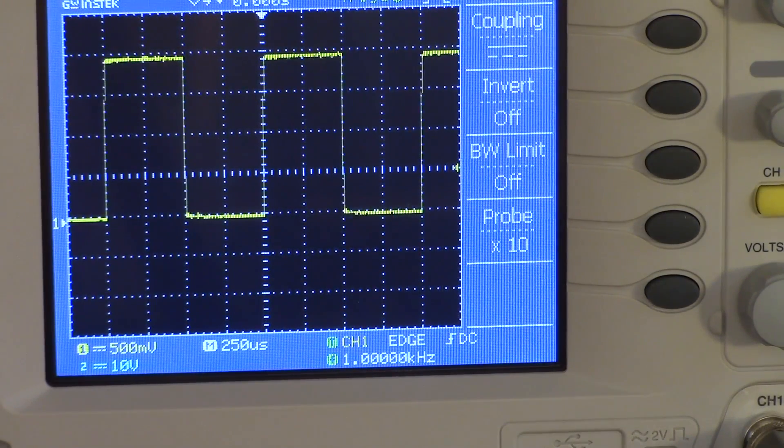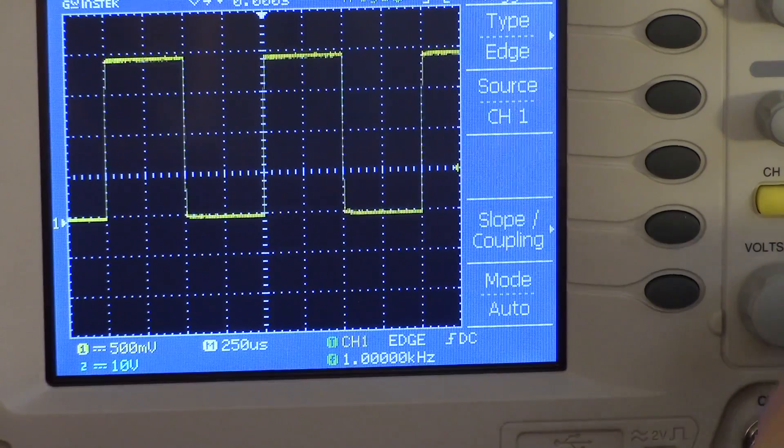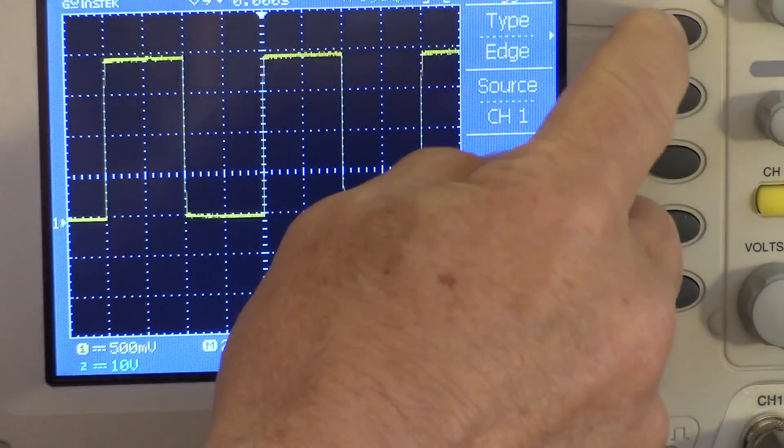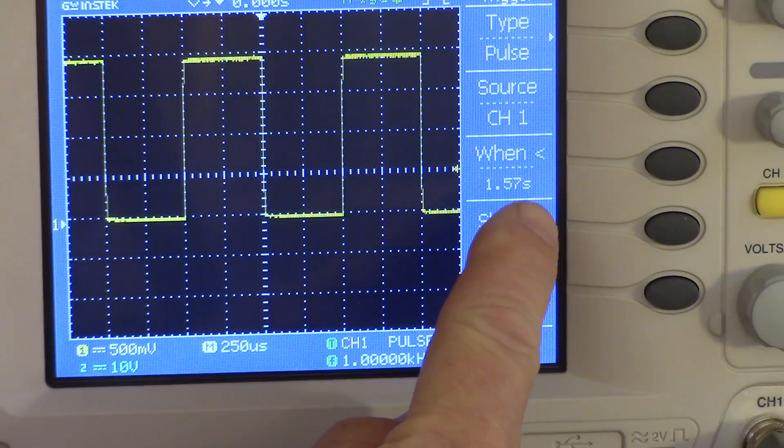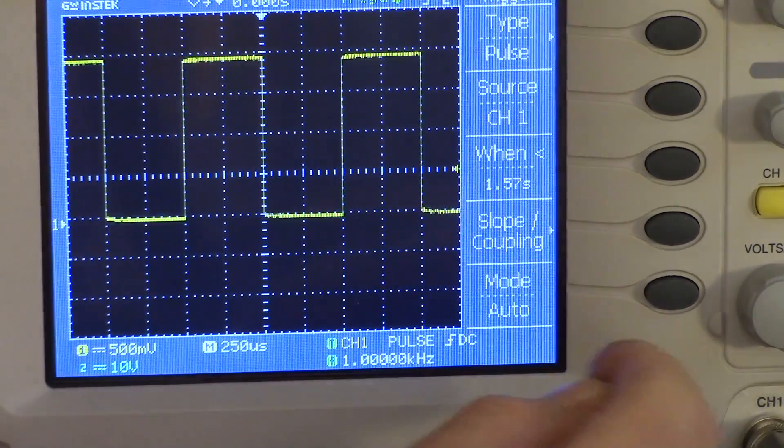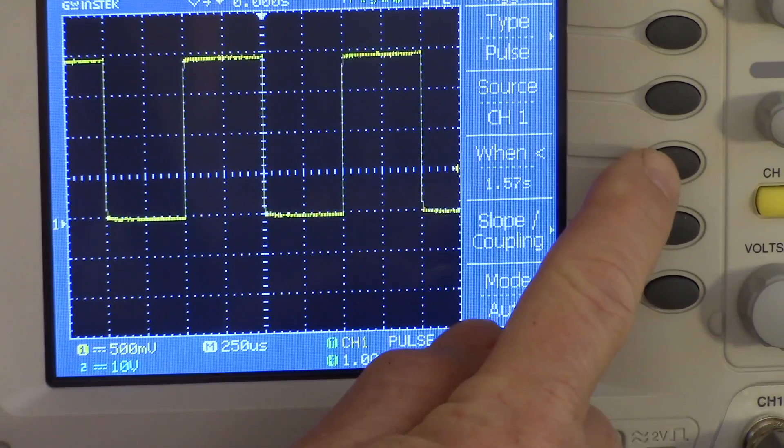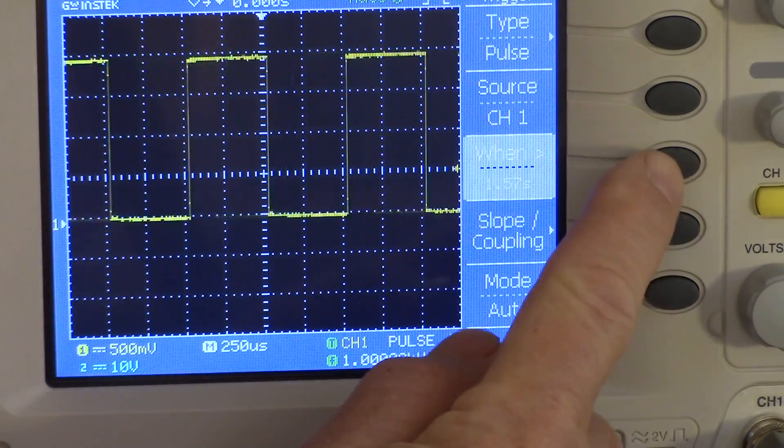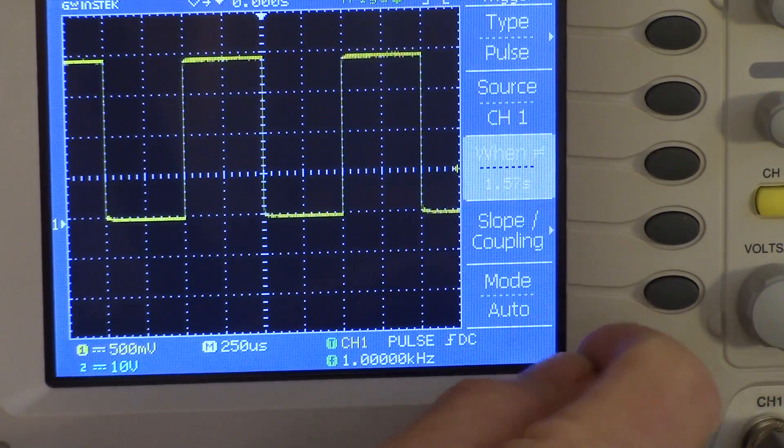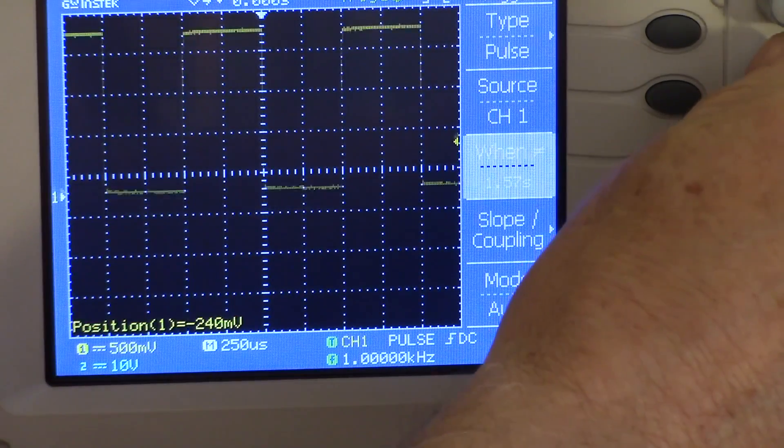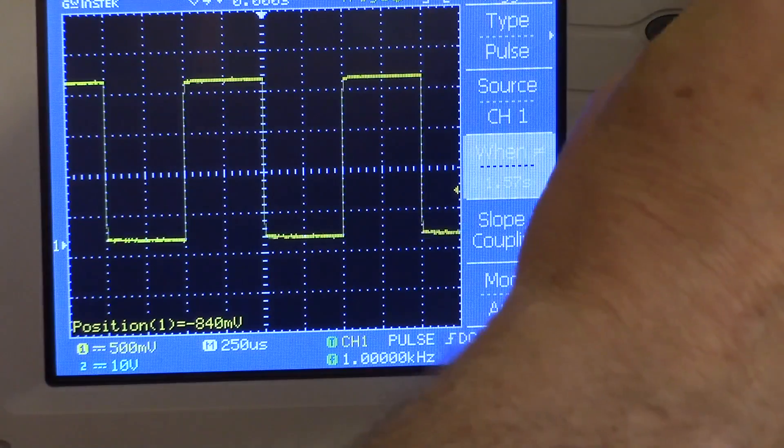It has all the usual trigger modes which are selected by this menu button, but it also has a nice pulse trigger mode. With the pulse trigger mode, you can set conditions so that the trigger happens when an event is less than some amount of time, greater than some amount of time, equals or not equals. And that time can be adjusted using this variable control here.